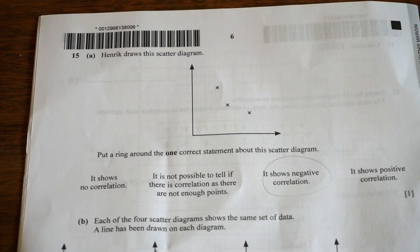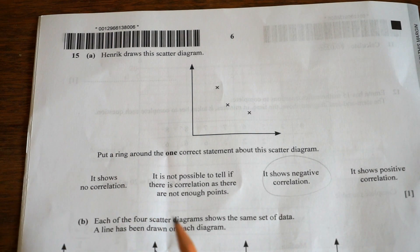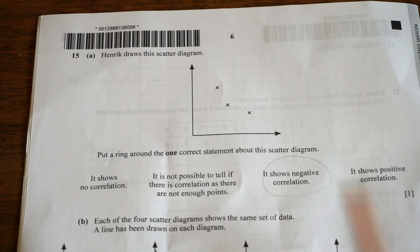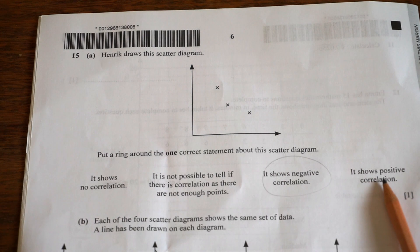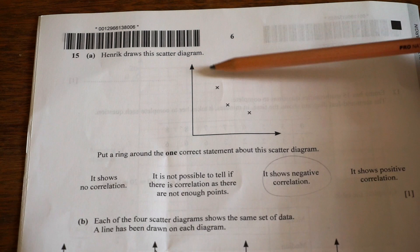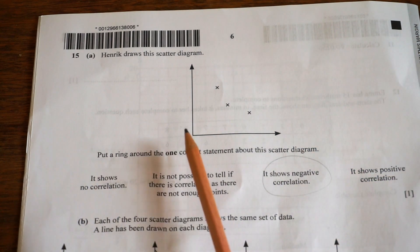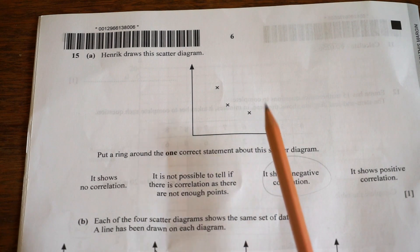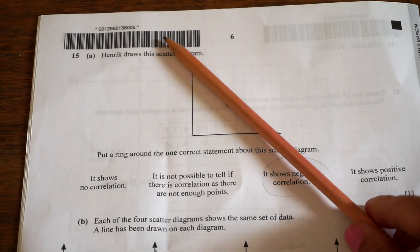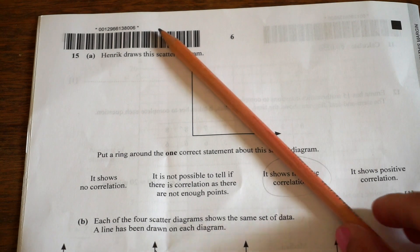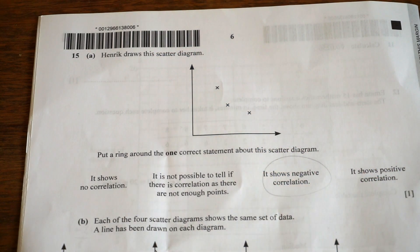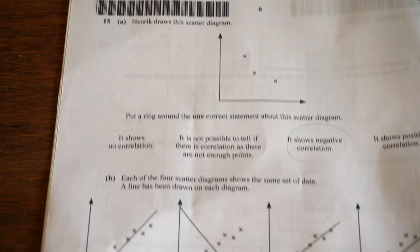They give you four statements: there's no correlation, it's not possible to tell if there's correlation as there are not enough points, negative correlation, and positive correlation. Hopefully you can see in this scatter diagram there's negative correlation, because as one variable increases the other one decreases. The points are slanting this way — like a line with a negative gradient — so this scatter diagram shows negative correlation.